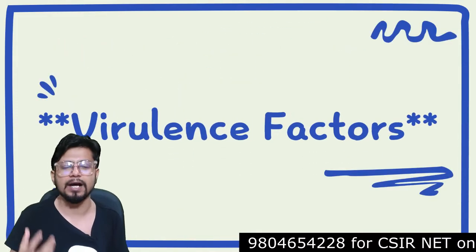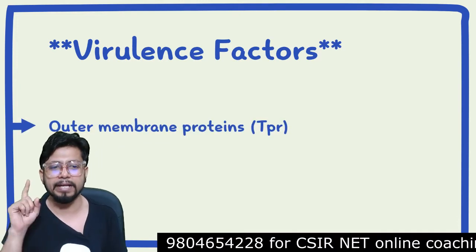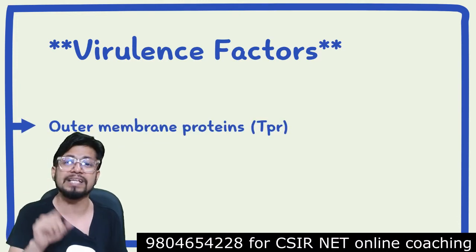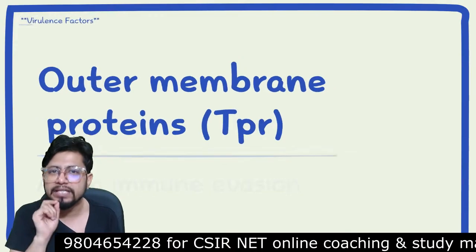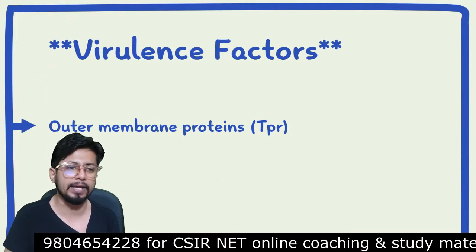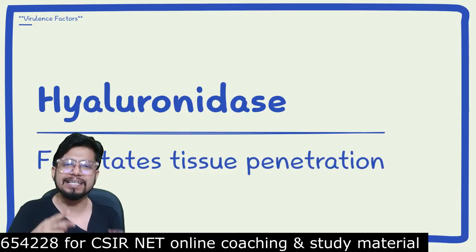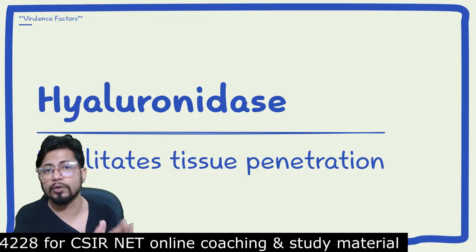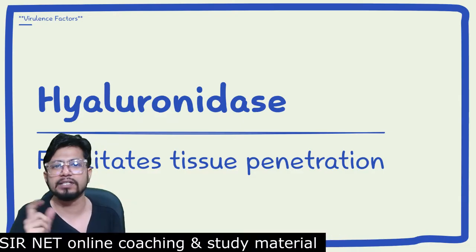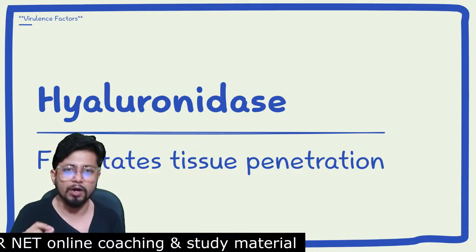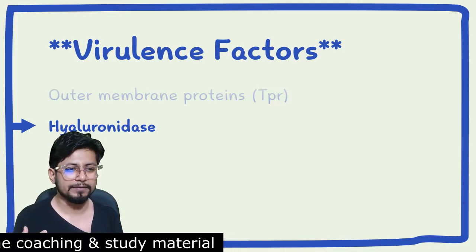The virulence factors of Treponema pallidum include outer membrane proteins known as TPRs, which aid in immune evasion. Another virulence factor is hyaluronidase, which facilitates the degradation of hyaluronic acid — a tissue-protecting material — thereby helping in the tissue penetration of Treponema pallidum.